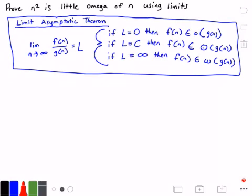In the blue rectangle here I have the limit asymptotic theorem, which states that if we have the limit as n approaches infinity for a function f(n) divided by another function g(n) equal to some limit L, then if L equals 0, that means f(n) is little o of g(n).